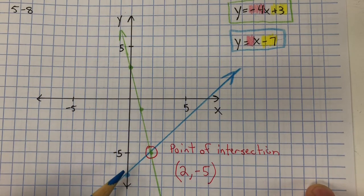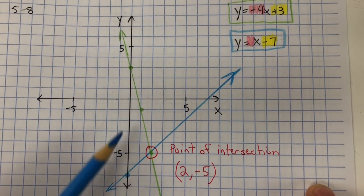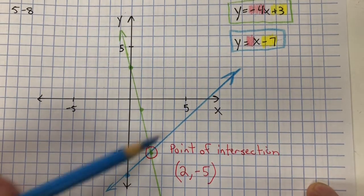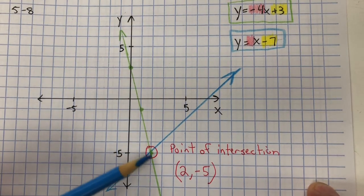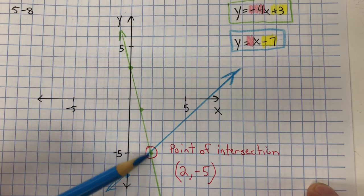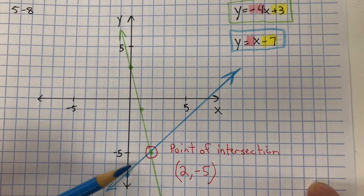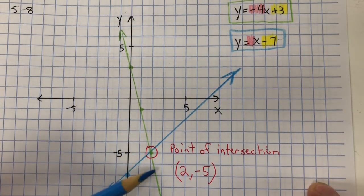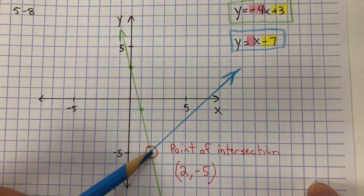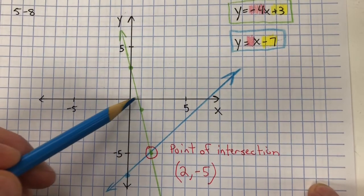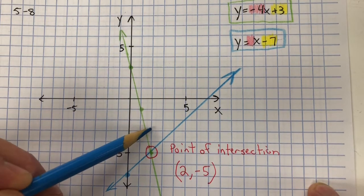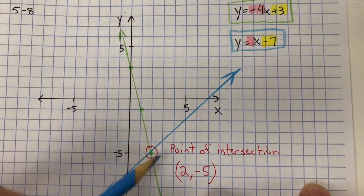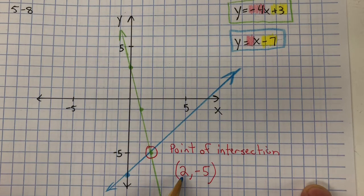And it asks for the point of intersection. The point of intersection is where the two lines meet. They cross over each other. Think of an intersection of a road where two roads cross over. And at that point is right here: positive 2 on the X, negative 5 on the Y. So the point of intersection is 2 comma negative 5.